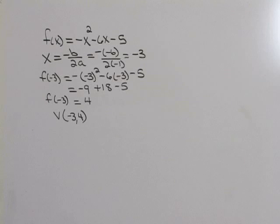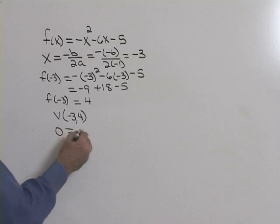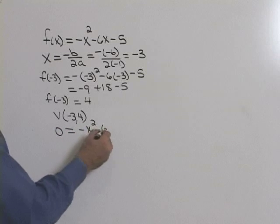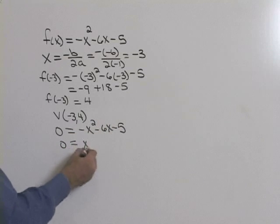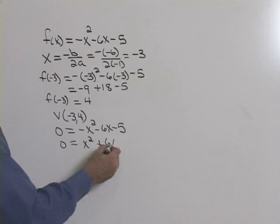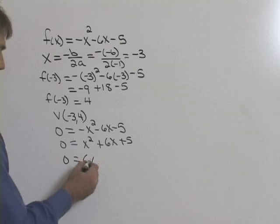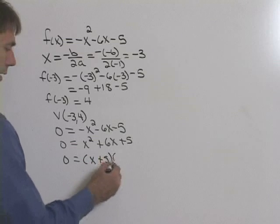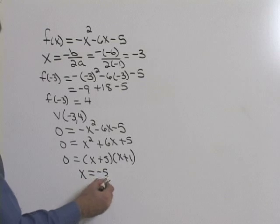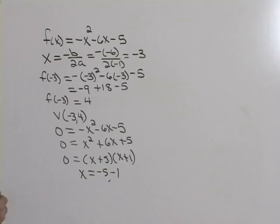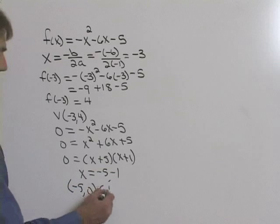Now we need to find our intercepts. To find our x-intercepts, let's set our equation equal to 0. If we multiply through by -1, we'll have 0 = x² + 6x + 5. If we factor that, we'll have (x + 5)(x + 1). And if you set each factor equal to 0, you get x equals -5 and -1. So our x-intercepts are (-5, 0) and (-1, 0).